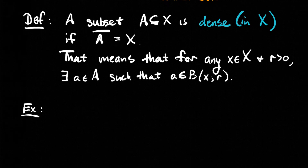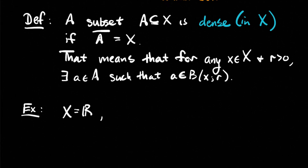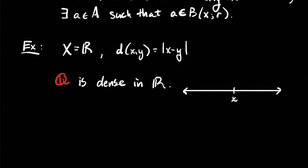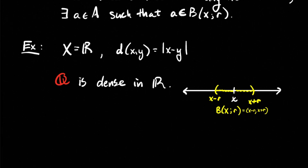For example, if X is the real line and we measure distance between two real numbers in the usual way — the absolute value of the difference — then the rational numbers Q form a dense subset of the real numbers. If you put any real number x on the real line and take any interval around x, say r units to the left and r units to the right — that's the ball B(x; r), the interval (x−r, x+r) — then no matter what interval you put around x, you can always find a rational number inside that interval.